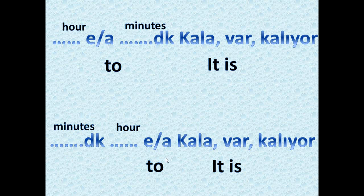Let's make it clear with some examples. 'Bire on dakika var' — here the hour gets the suffix 'e'. 'On dakika' is 10 minutes. I'm going to give all examples with 10 minutes so you'll understand how this suffix works. 'Bire on dakika var' means it's 10 minutes to one. 'İkiye on dakika var' means it's 10 minutes to two.